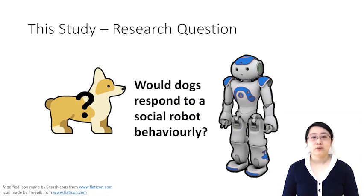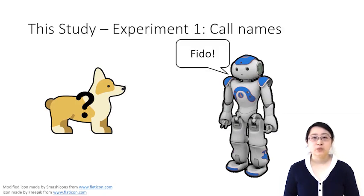In our study, we aimed at understanding would dogs respond to a social robot behaviorally at all or not. To explore this, we included two experiments. In experiment 1, we tested whether dogs would respond to a robot calling its name.